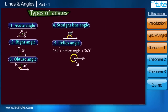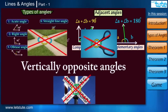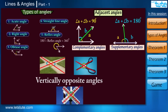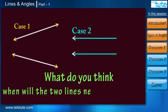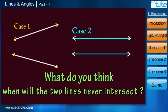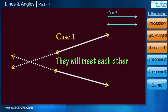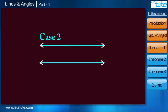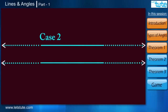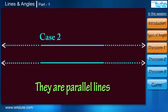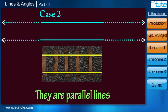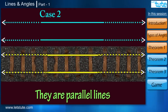Till now we have learned there are various types of angles, and angles can be formed only if lines are intersecting. But when will two lines never intersect? In case 1, if we extend the lines, they will eventually meet at some point. But in case 2, these lines will never intersect because they are parallel lines. Just imagine this like a railway track — two tracks are always running parallel to each other but they never intersect or meet each other.